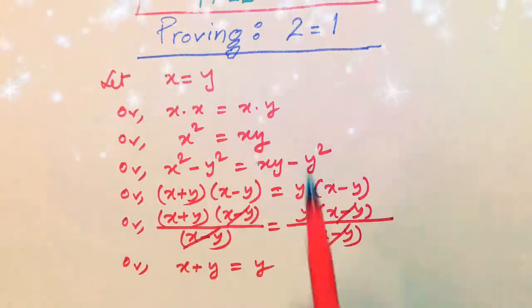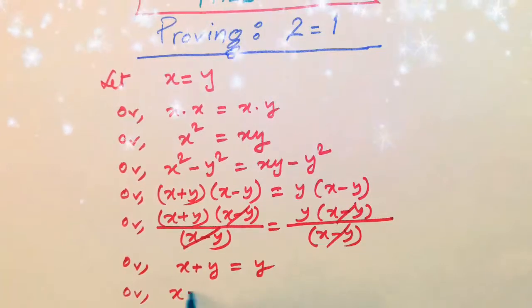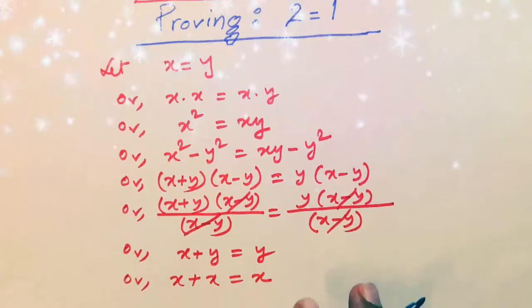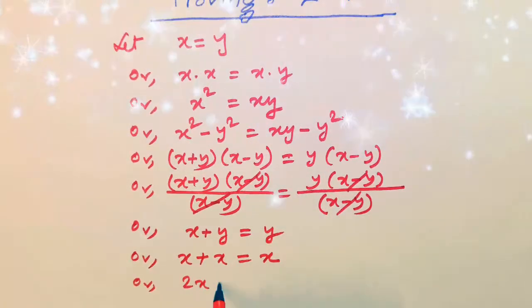Now since x is equal to y, we shall replace this y by x, or x plus x is equal to x. x plus x, that is 2x is equal to x.